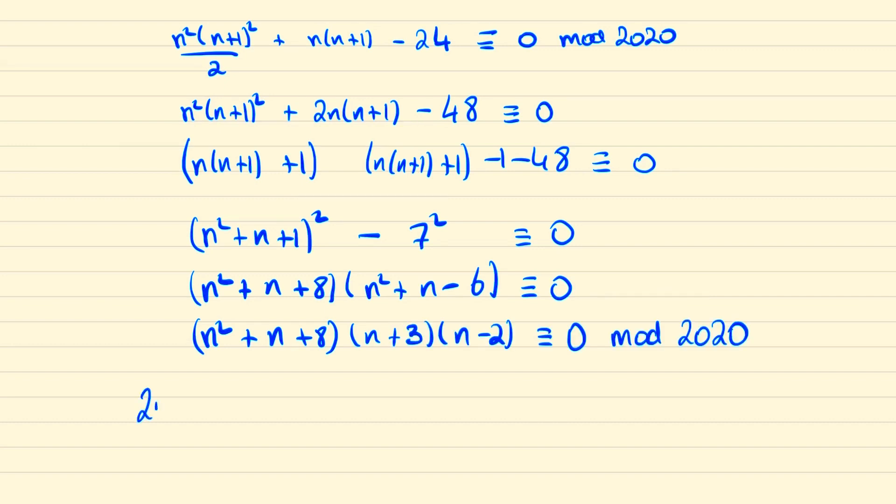Now if we look at the prime factors of 2020 this is 2 squared times 5 times 101. Which would mean that each of these expressions must be 0 mod one of these prime factors.